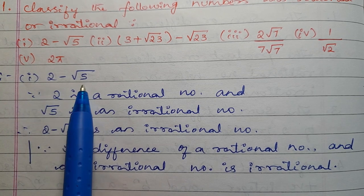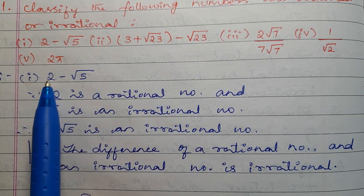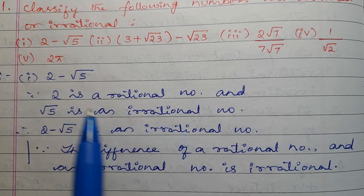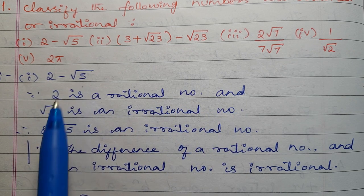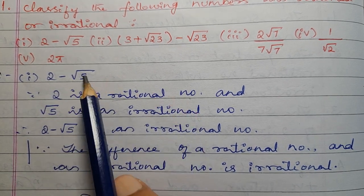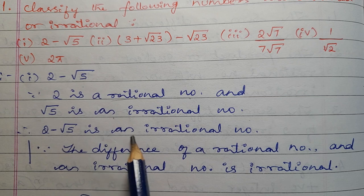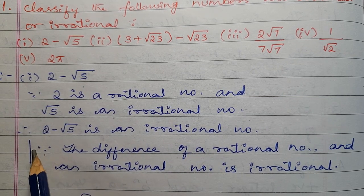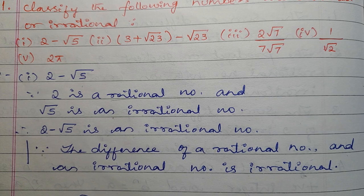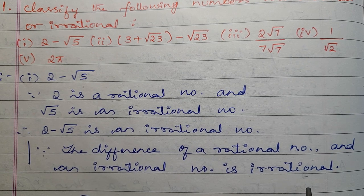First one: 2 minus square root of 5. Since 2 is a rational number, and square root of 5 is an irrational number, 2 minus square root of 5 is an irrational number. Because the difference of a rational number and an irrational number is irrational.